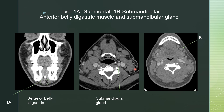For level one lymph nodes, you just need to know the anterior belly of the digastric muscle and the submandibular gland. Level 1A are between the bellies of the digastric. Level 1B are between the anterior belly of the digastric and the submandibular gland. Here are the 1B lymph nodes, and here are the 1A lymph nodes.